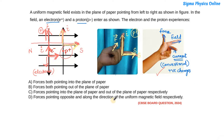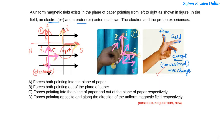Coming to the electron: the direction of the magnetic field remains the same, from left to right, and the conventional current is again upward. Applying Fleming's left hand rule, the thumb points inward — into the plane of paper. So the force acting on the electron is also into the plane of paper. Therefore, the correct answer is option A: forces both pointing into the plane of paper.